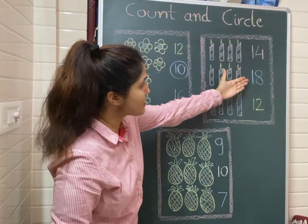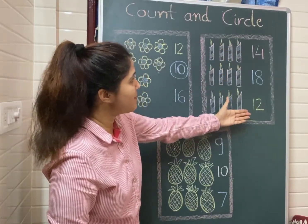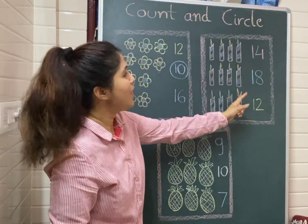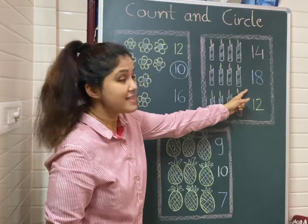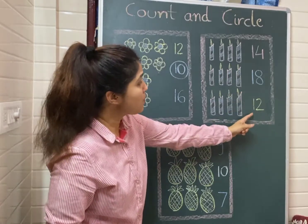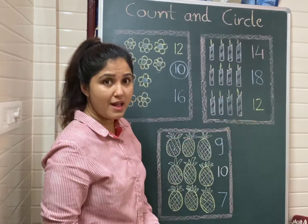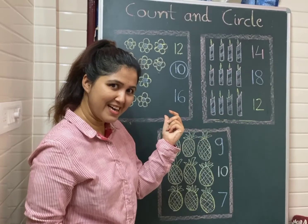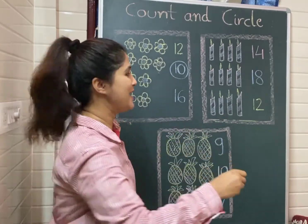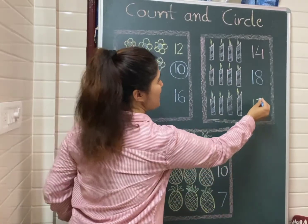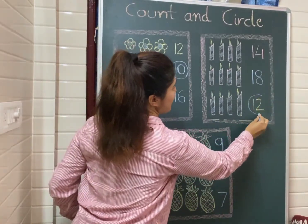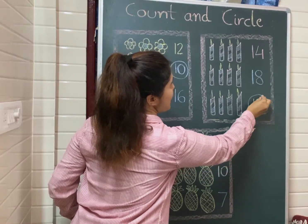So which is the correct number here? 14, 18, or 12? Which is the correct number here? Yes, 12. So we need to circle number 12.